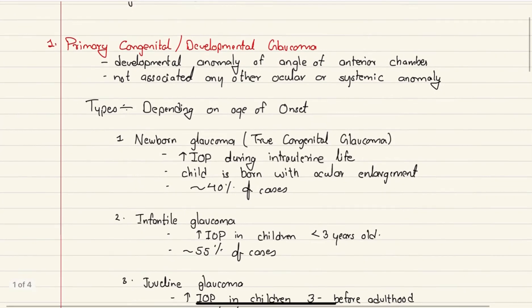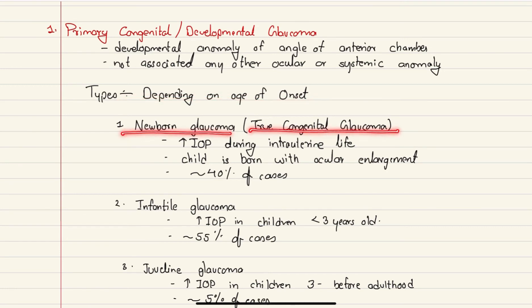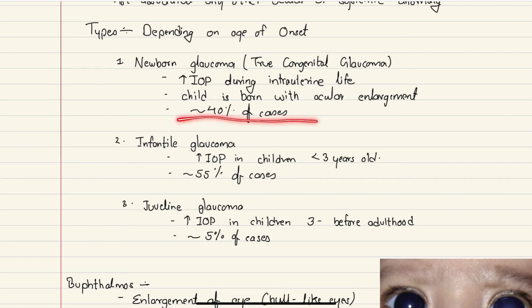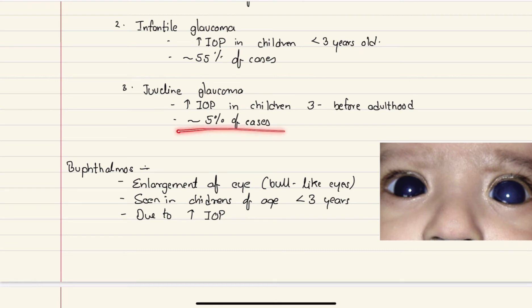Primary congenital or developmental glaucoma involves a developmental anomaly of the angle of the anterior chamber and is not associated with any other ocular or systemic anomaly. It is divided into types by age of onset. In newborn or true congenital glaucoma, intraocular pressure is raised during intrauterine life, so the child is born with ocular enlargement — seen in about 40% of cases. Infantile glaucoma involves raised intraocular pressure in children under three years old — about 55% of cases. Juvenile glaucoma occurs from age three until adulthood — the remaining 5%.